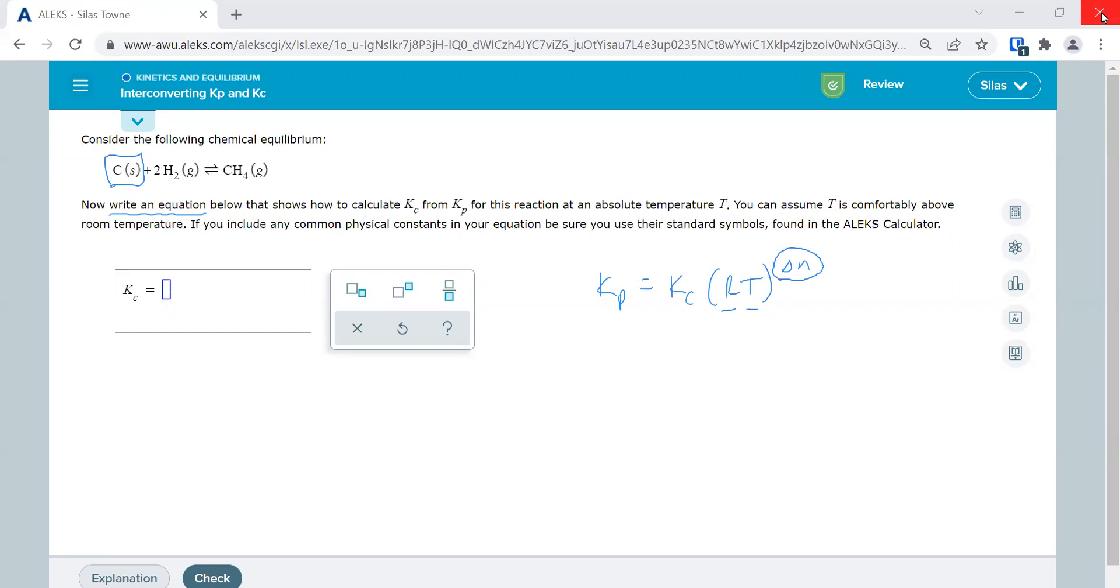All you have to do is find delta N. Now the other way, and the one this one is looking for is Kc equals Kp RT negative delta N. So when we're looking for Kc, it's a negative delta N. When we're looking for Kp, it's a positive one.